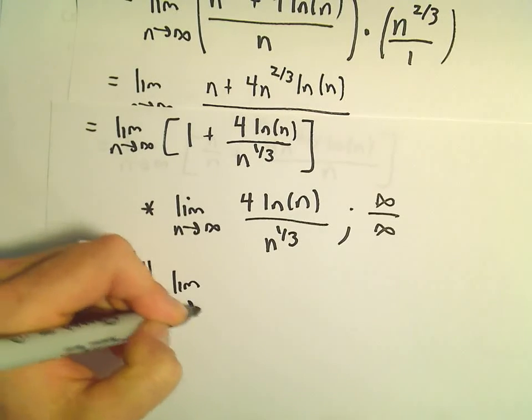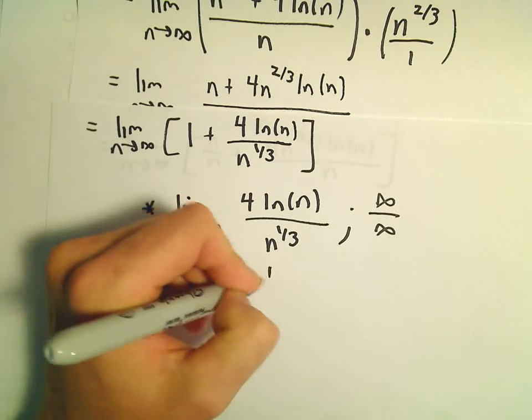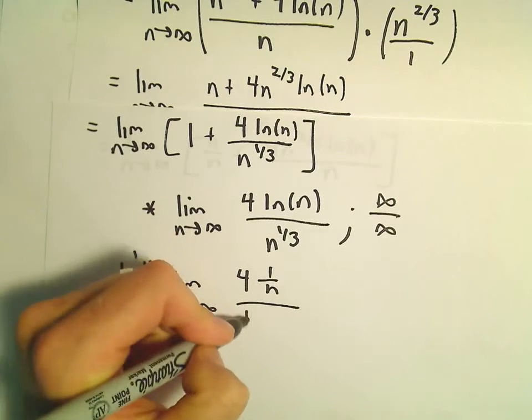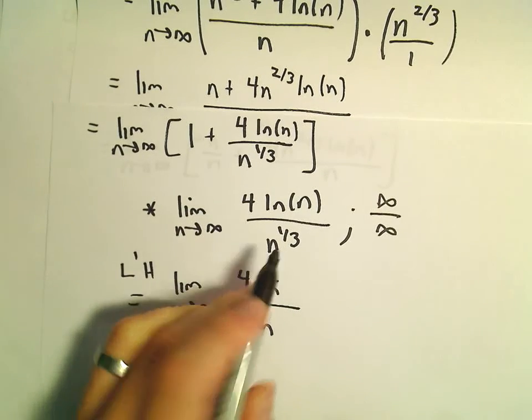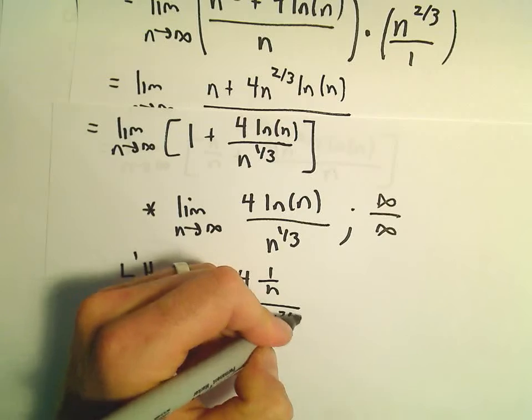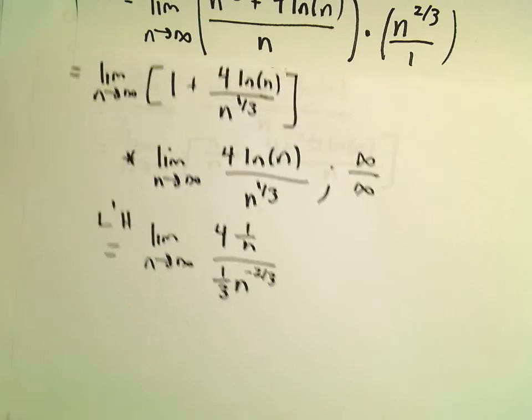we'll get 4 times 1 over n. And then we'll have 1/3 times n. We have to subtract 1 away. So that will give us to the negative 2/3 power.